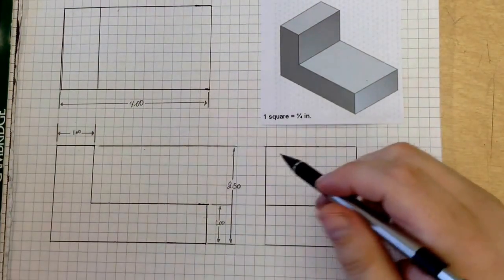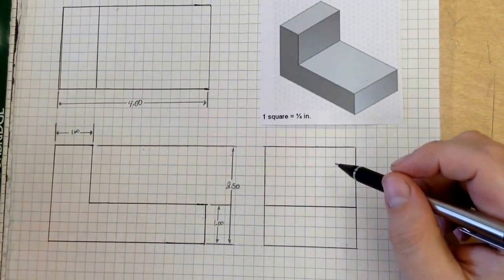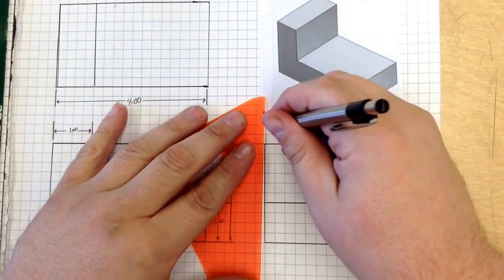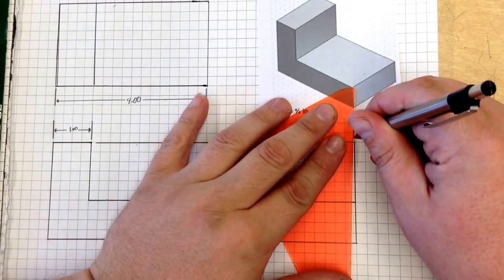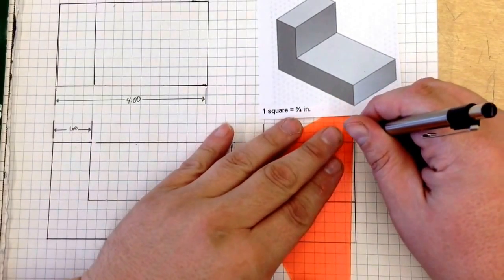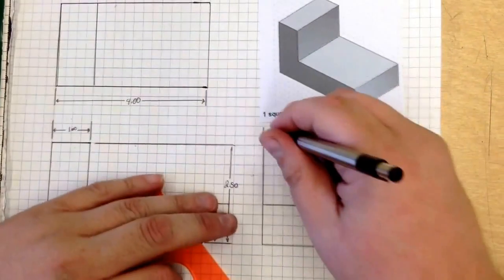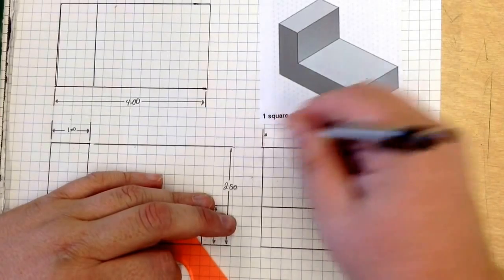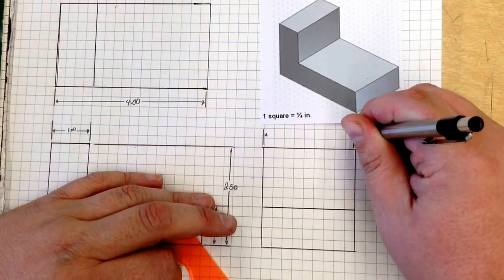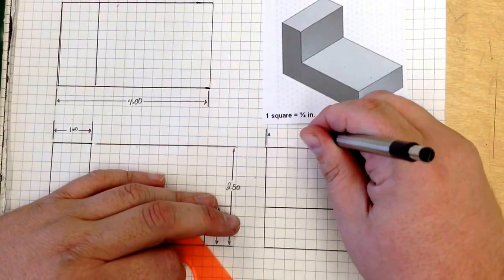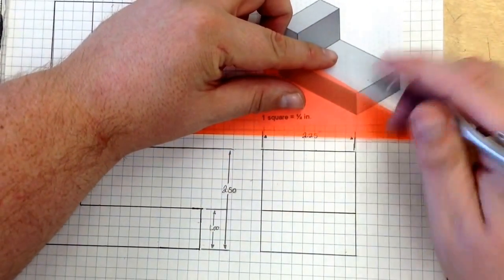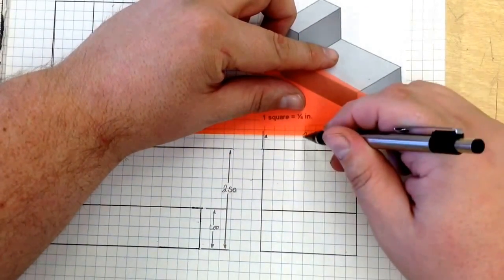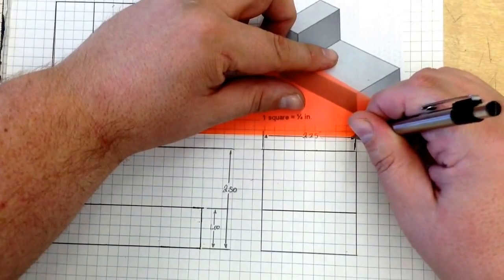And finally, we just need a width measurement, which will come right here, go up, go up. Make our arrows, this is 2.25, and connect them like so.